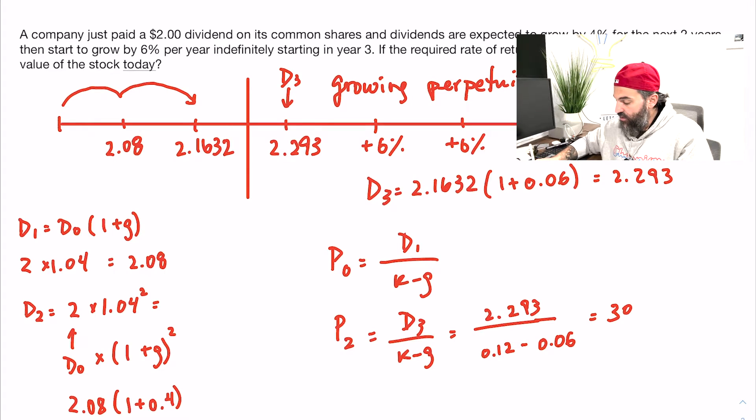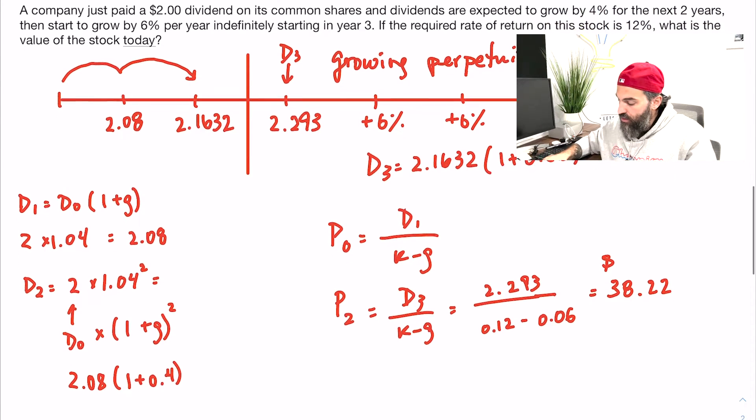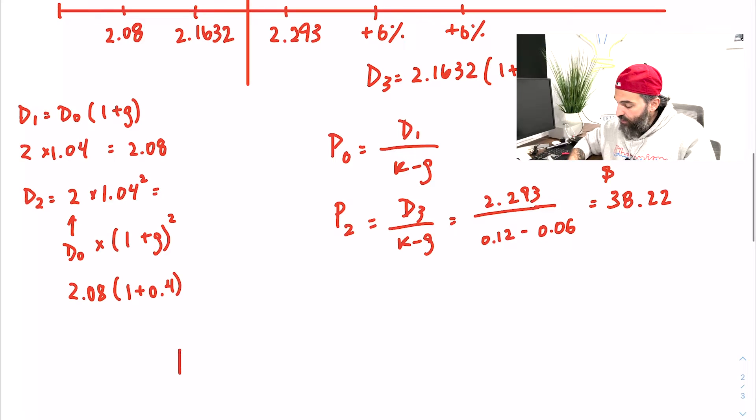Now it's time to use the dividend discount model to put it all together. If I want to find the price of the stock today, I know that it's the present value of all future dividends. So the dividend in year one at $2.08, if I discount that back one year—so 1.12—then I'll add the next one, so 2.1632 over 1.12 squared.